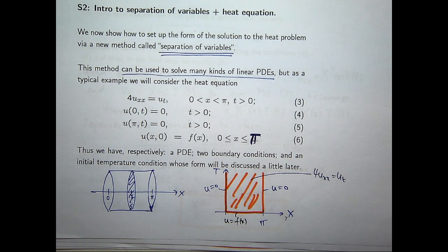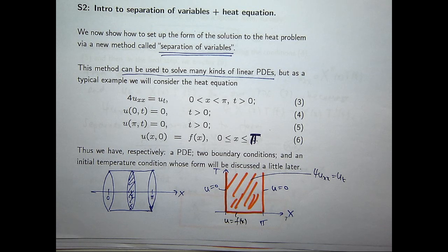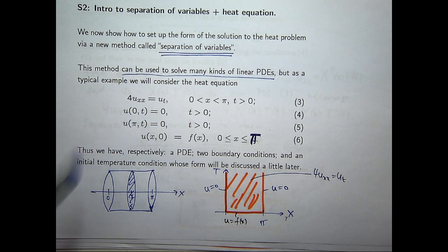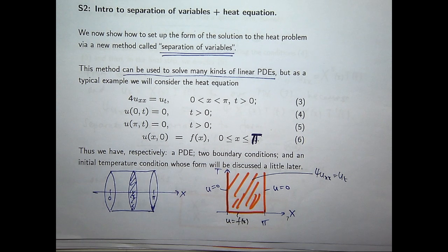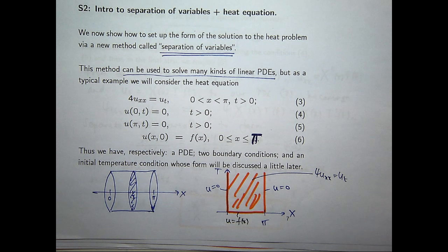So you've got a bar — in this case, it's of length pi, which is a little bit unrealistic, but it means the working is a bit neater. U represents the temperature at any point along the bar, x, and time T. You have some boundary conditions that tell you the temperature is 0 at the ends of the bar. And this function here is known as an initial temperature, which gives you, at any point along the bar at time T equals 0, some knowledge of the temperature.